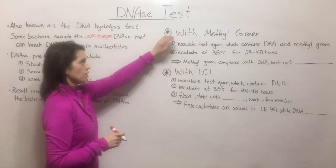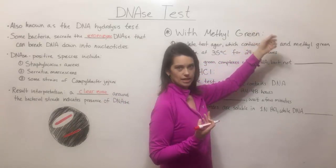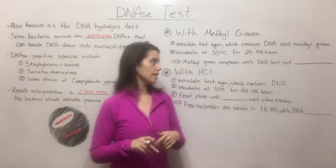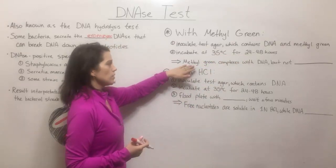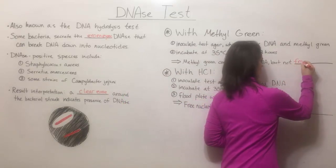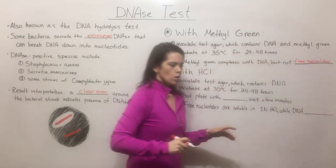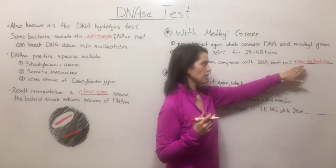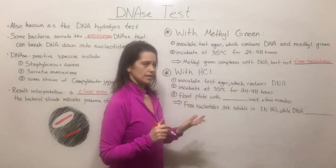The first method uses methyl green. There's a test agar which contains DNA for the DNase to break down if DNase is present in that isolate, as well as methyl green. You inoculate the test agar by making a streak of the isolate and incubate at 35 degrees Celsius for 24 to 48 hours, then observe. Methyl green complexes with DNA but not with free nucleotides, so wherever DNA is present the methyl green will complex with it making the agar green, but wherever the DNA has been broken down into free nucleotides by the exoenzyme DNase, there will be a clear zone — indicating a DNase positive result.